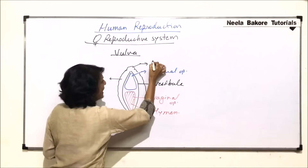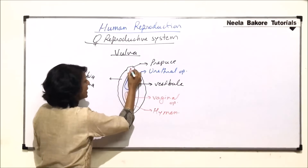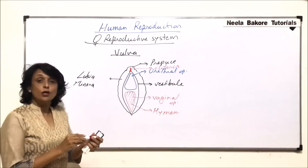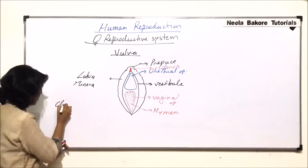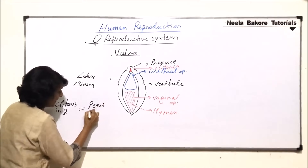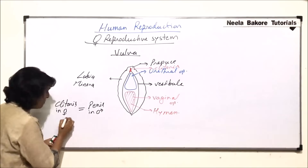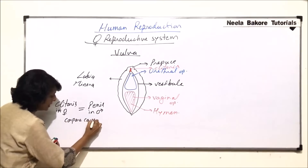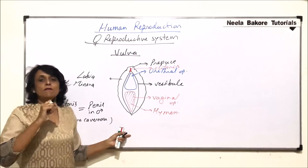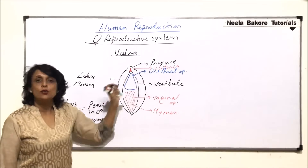The labia minora at its upper end is loose and is known as the prepuce. This prepuce actually covers a very small erectile tissue known as the clitoris. The clitoris is homologous to the penis in males; the reason for this homologous nature is that both have corpora cavernosa, the same erectile tissue. However, the clitoris is a very small structure, and the loose fold of skin covering it is the prepuce, which is part of the labia minora.